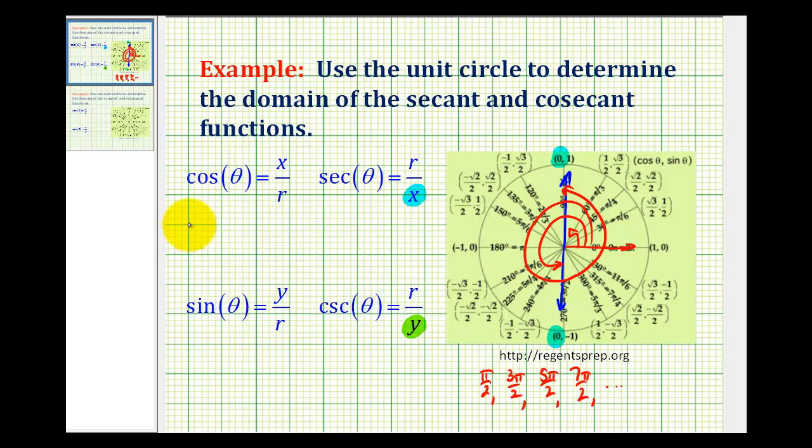So the domain for the secant function would be all reals where theta does not equal pi over two radians plus pi times k, where k would be some integer, meaning zero, positive or negative one, positive or negative two, and so on.